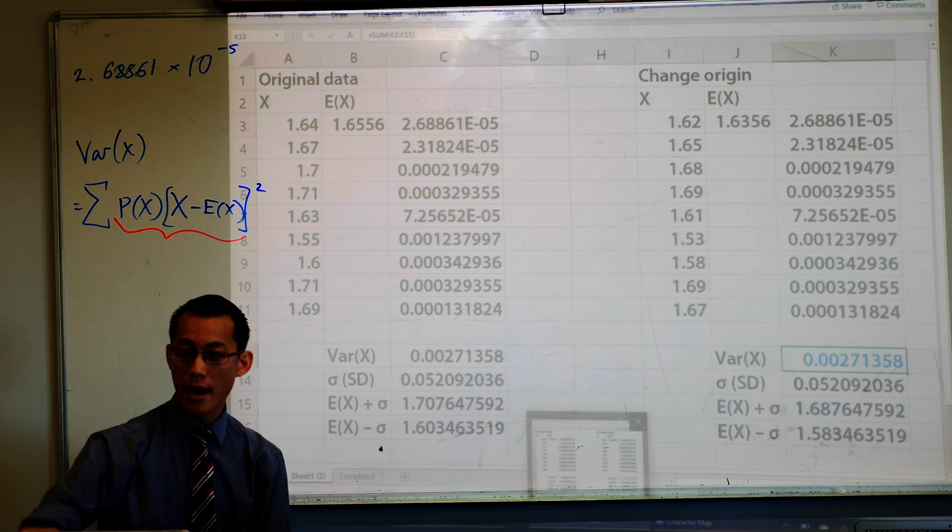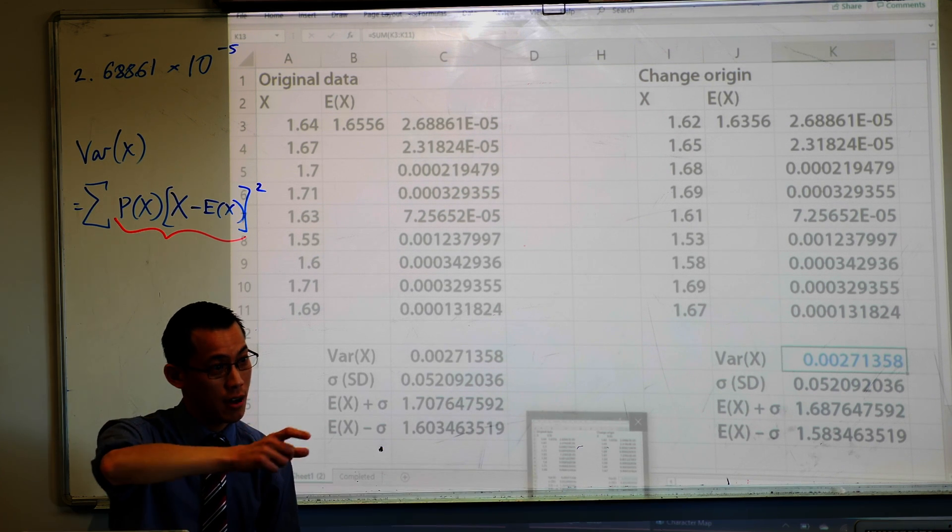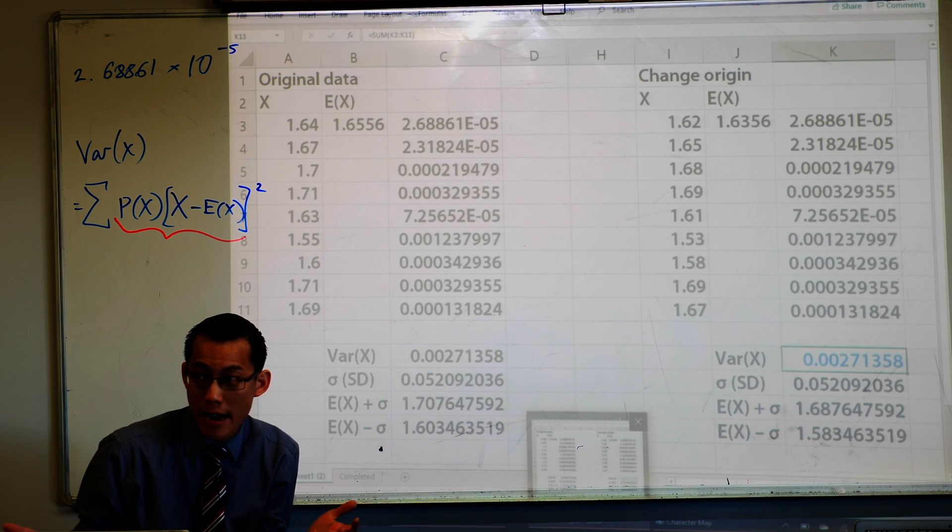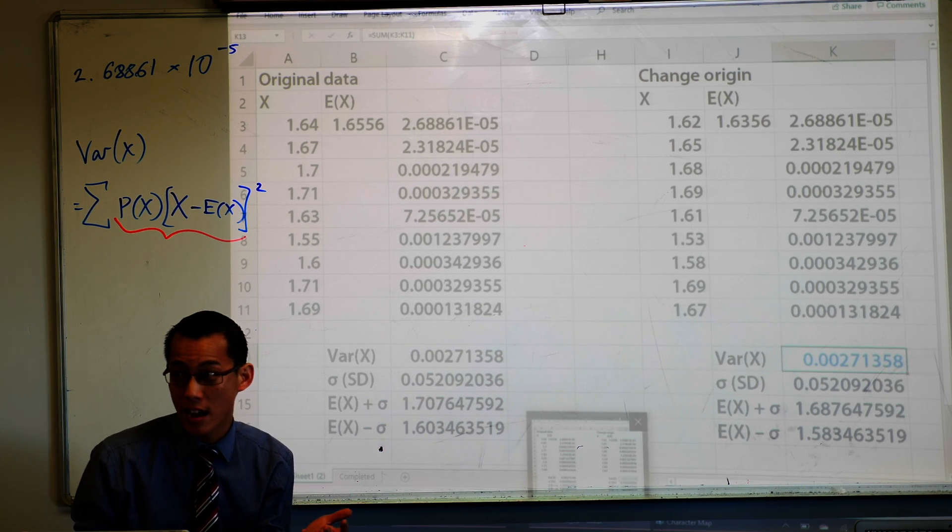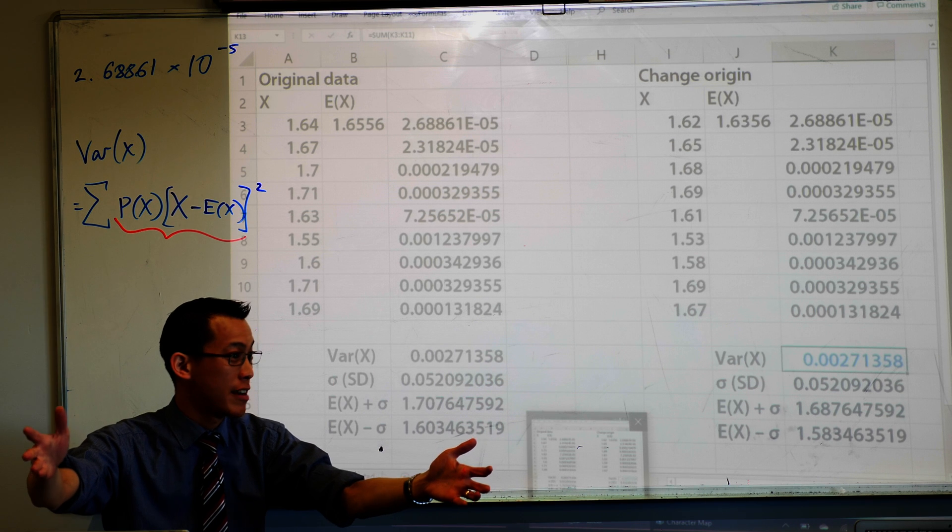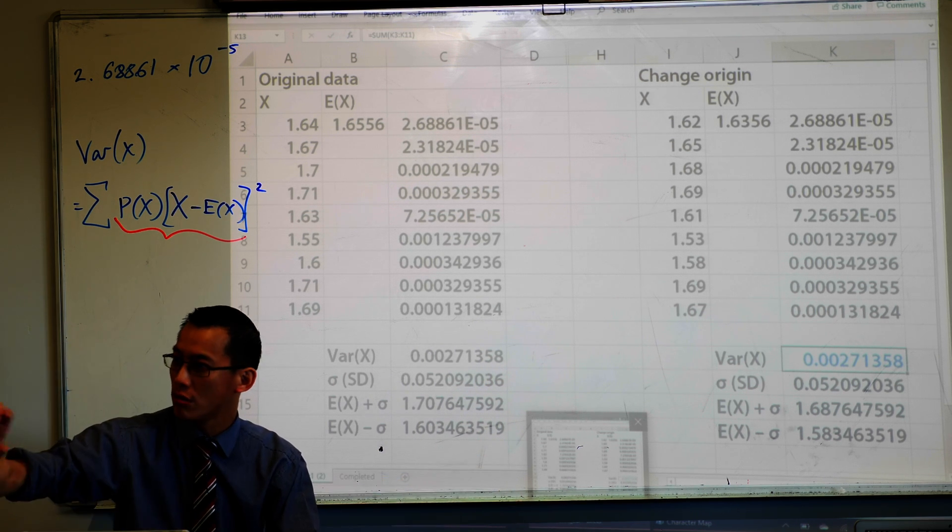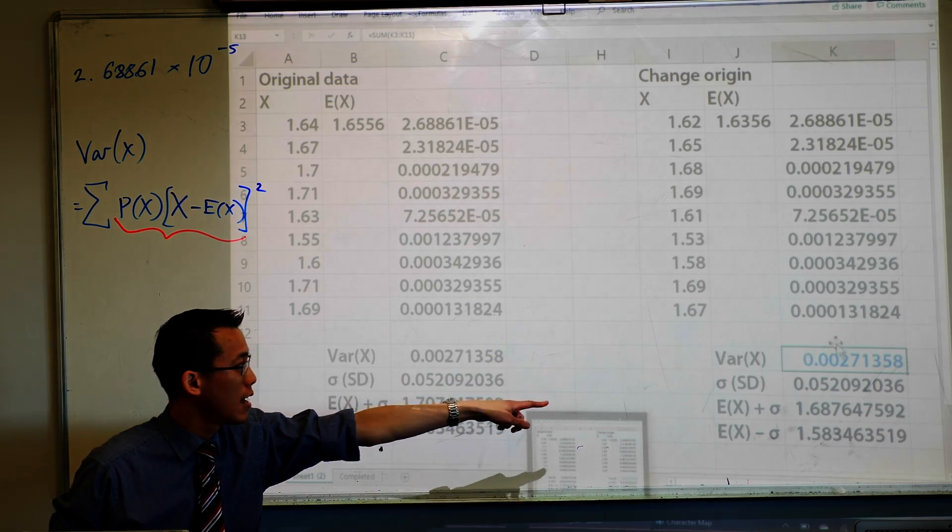Now when I took all of you and I just subtracted the height of your shoes, right? Are you more spread out? Are you less spread out? You're still exactly as spread out as you were before. I've just taken two off everyone. So that's why the variance has not changed.